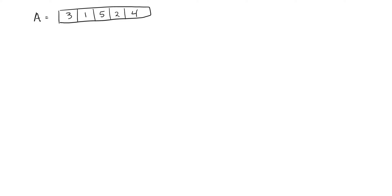The goal here is that we have five elements in this list — five numbers — and I want to sort them in ascending order. They're three, one, five, two, four right now. I want one, two, three, four, five. Bubble sort is going to get me that answer, but it's going to do it in a very slow way.